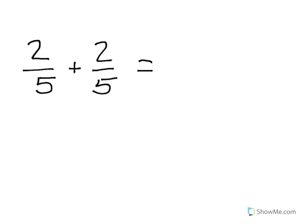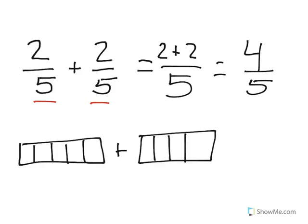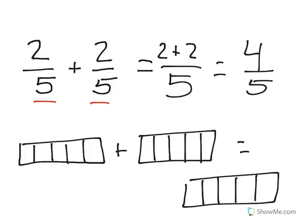Here's another one: two fifths plus two fifths. Again, we look at our denominators to see if they are the same — yes they are, so we carry that right over to our answer. Then we add our numerators: two plus two equals four fifths. Remember, we never add the denominators; we don't say five plus five equals ten — we just carry it straight over. I'll draw area models to show what this looks like as a picture. We shade two fifths in each circle, and in the answer model we color one piece for each, giving us four fifths.